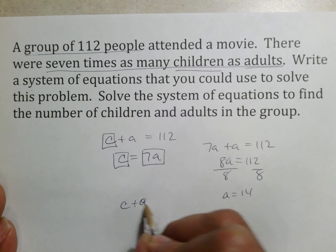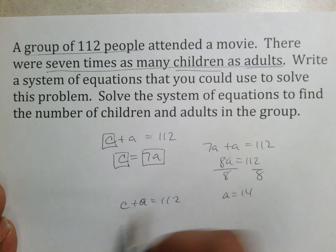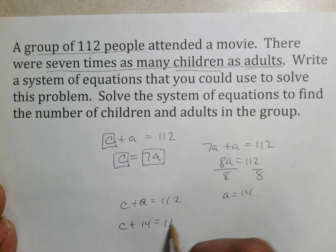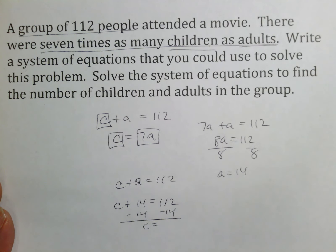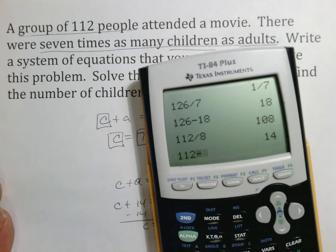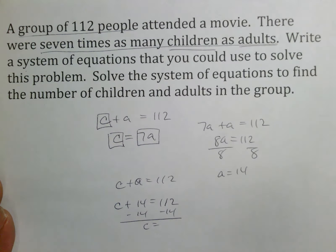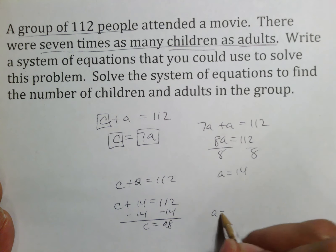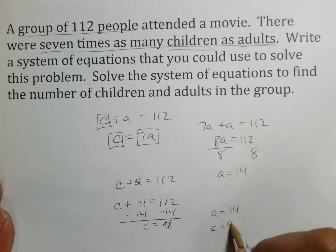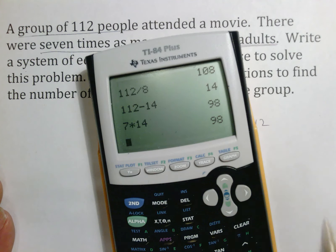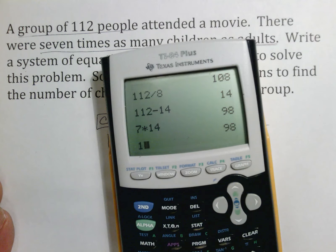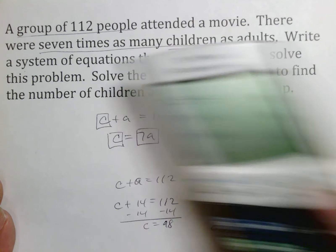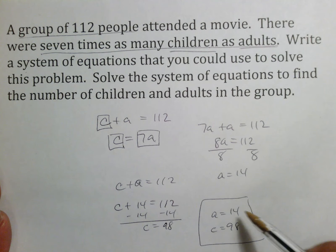Take a = 14 and plug it back into c + a = 112: c + 14 = 112, so c = 98. There were 14 adults and 98 children. Check: 7 × 14 = 98, which confirms the comparison, and 14 + 98 = 112, which confirms the total.